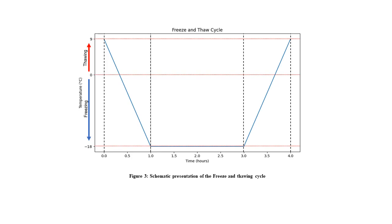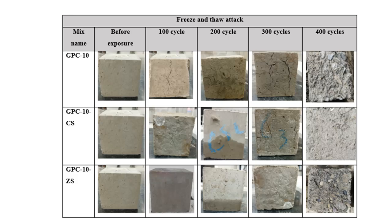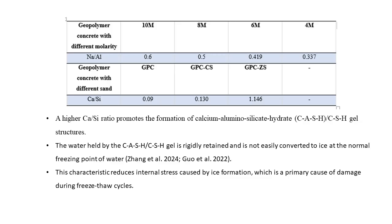From experimental results, we can see how concrete looks after a freeze-thaw attack — showing cubes before exposure and after exposure cycles of 100, 200, 300, and 400 cycles. The conclusion from the experimental program is that when the calcium-to-silica (Ca/Si) ratio is increased, it promotes formation of calcium alumino-silicate hydrate or calcium silicate hydrates. Water held in these phases is very rigid and cannot easily convert to ice, so a higher Ca/Si ratio leads to better freeze-thaw performance.